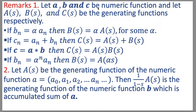Suppose a, b, and c are numeric functions and let a(s), b(s), and c(s) be their generating functions respectively. If bn = α·an, then b(s) = α·a(s), where α is any number. If cn = an + bn, then c(s) = a(s) + b(s). If c = a * b (convolution), then c(s) = a(s)·b(s). If bn = α^n · an, then b(s) = a(α·s). If a(s) is the generating function of the numeric function a = {a0, a1, a2, ..., an}, then (1/(1-s))·a(s) is the generating function of the numeric function b, which is the accumulated sum of a.